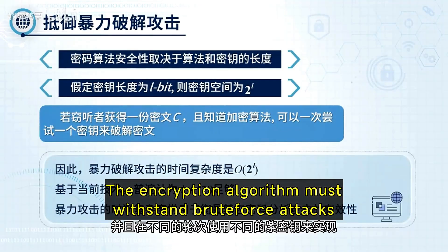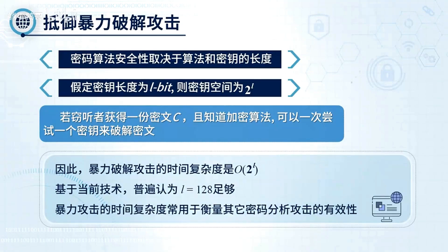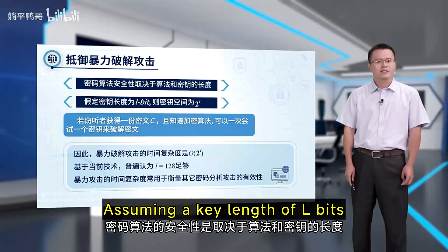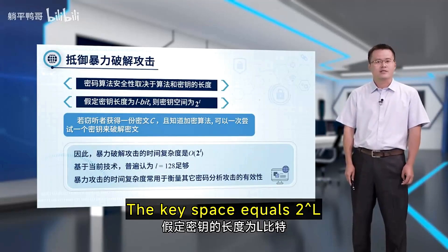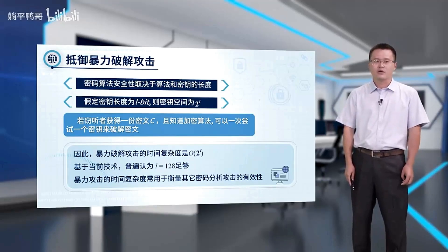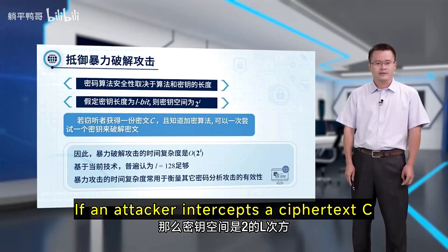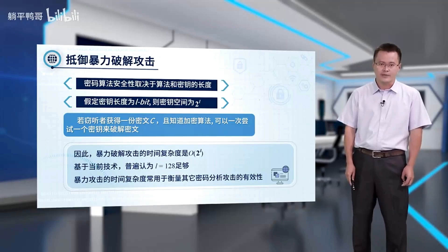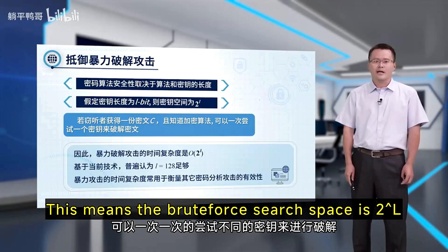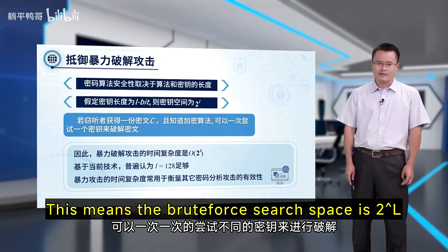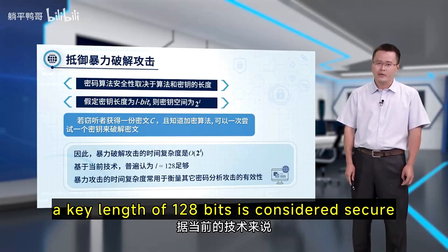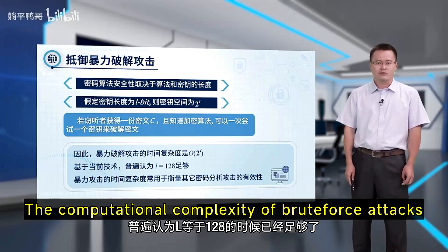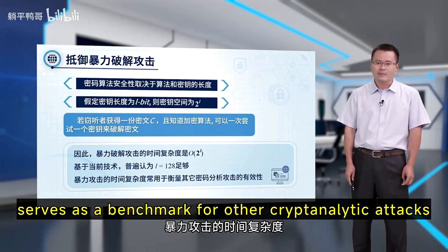The encryption algorithm must withstand brute force attacks. Algorithm security depends on both the algorithm and key length. Assuming a key length of L bits, the key space equals 2 to the power of L. If an attacker intercepts a ciphertext C and has knowledge of the encryption algorithm, they can try every possible key, making the brute force search space 2 to the power of L. With current technology, a key length of 120 bits is considered secure. The computational complexity of brute force attacks serves as a benchmark for other cryptanalytic attacks.